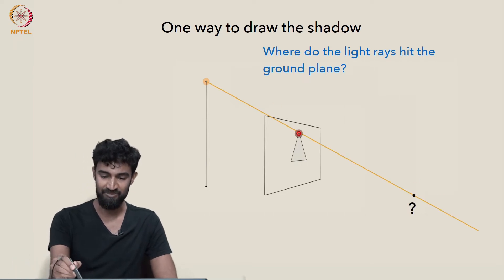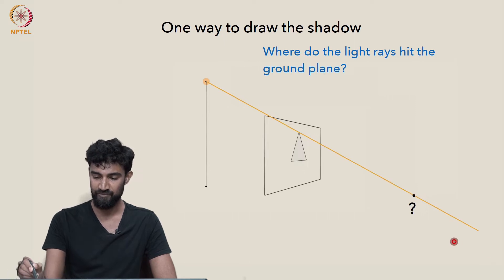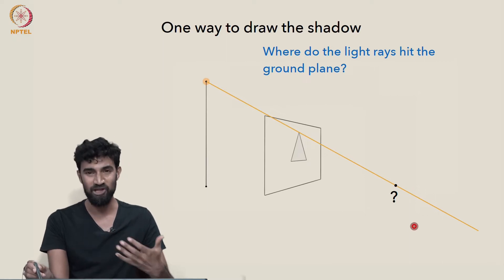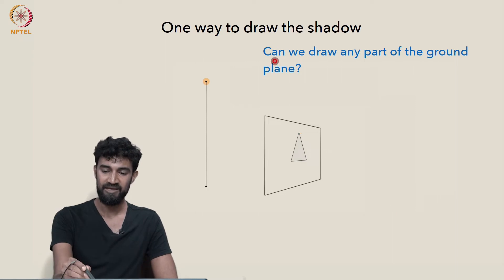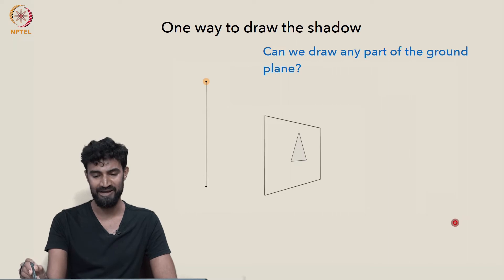For example, this top vertex of the triangle, is it going to land here? Or maybe up here? Or maybe down here? All of those seem vaguely plausible, but which is the correct place? Can we draw any part of the ground plane that's going to help us determine which of those was correct?